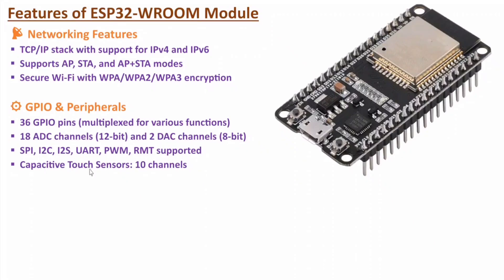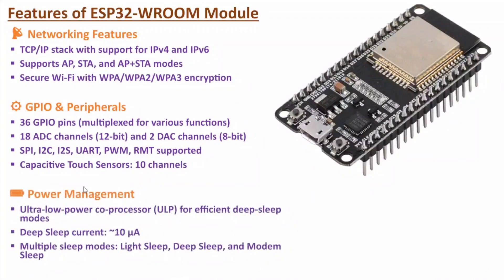It also has capacitive touch sensors with 10 channels. The next feature is based on power management. Here we have an ultra low power co-processor for efficient deep sleep mode. With deep sleep mode, it functions at only 10 micro amperes of current. So if you have battery-driven applications requiring low power consumption, deep sleep mode is ideal. Different sleep modes are available: light sleep, deep sleep, and modem sleep, with deep sleep having minimum power consumption of around 10 micro amperes.